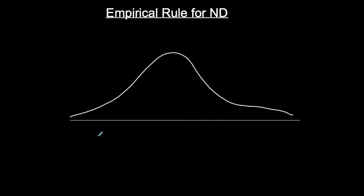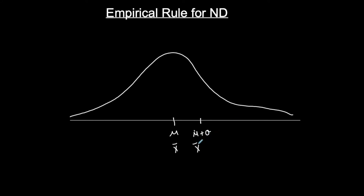When data follows this bell-shaped curve, the center of this curve is where the mean is located — this is the population mean μ, or x-bar if it's a sample. If I want to represent the data value located one standard deviation above the mean, I would take the mean and add one standard deviation: μ + σ, or x-bar + s.